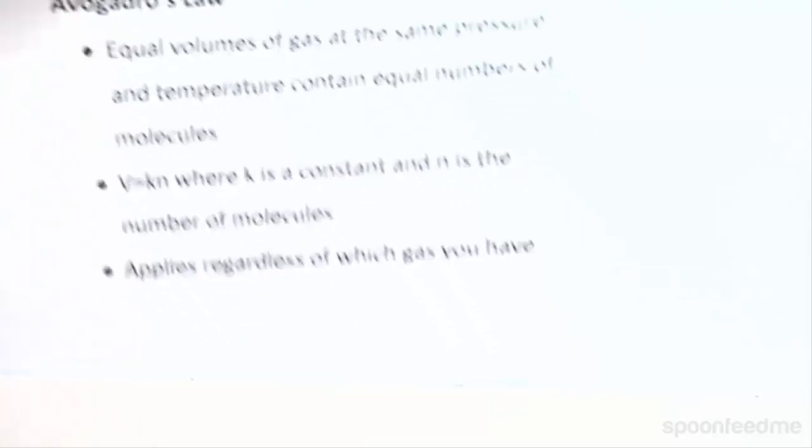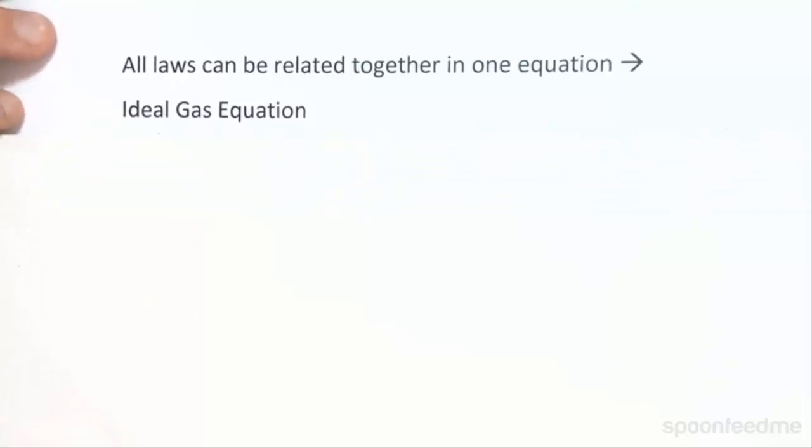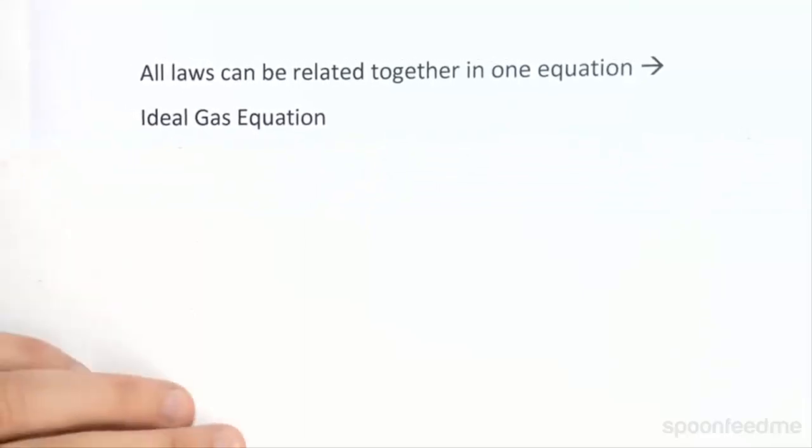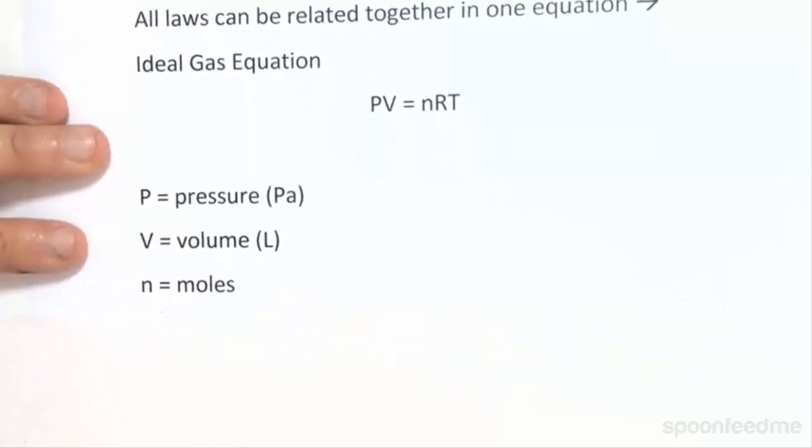So all of these laws can be related together in one equation. And this equation is known as the ideal gas equation. And this states that PV equals NRT, where P is the pressure in pascals, V is the volume in liters, N is the number of moles,